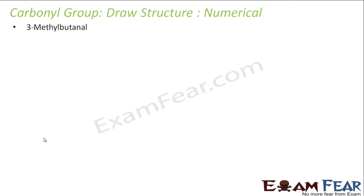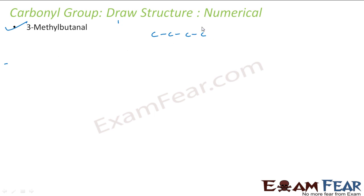Let's draw some structures. Let's take some examples. We'll draw the structure of 3-methylbutanal. So let's first draw butanal — 1, 2, 3, 4 carbons. It is butanal, meaning at position 1 I have an aldehyde. Let me number this starting from aldehyde: 1, 2, 3, 4. At 3, I have methyl. So I have methyl here. This will be the structure. You can add hydrogens — we have three bonds, only one hydrogen; two bonds, two hydrogens.